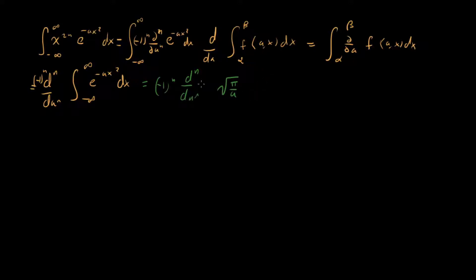So now the whole problem reduces to taking a bunch of derivatives of square root of pi over a — something we're intimately familiar with. It would be nice to have a closed form for arbitrary n, because if we're picking n equals 10 or 100, we don't want to take 100 derivatives. So let's look at a couple of cases and figure out the general rule.